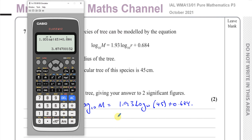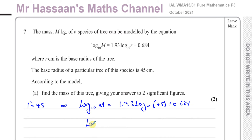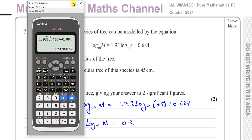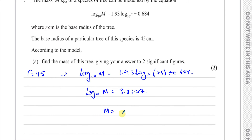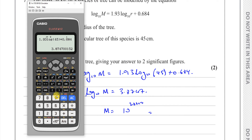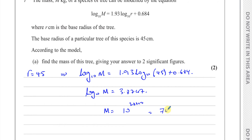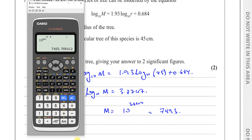That gives us 3.8747, so log base 10 of M equals 3.8747. To find M, we raise 10 to the power of 3.8747, which gives us 7493.766.